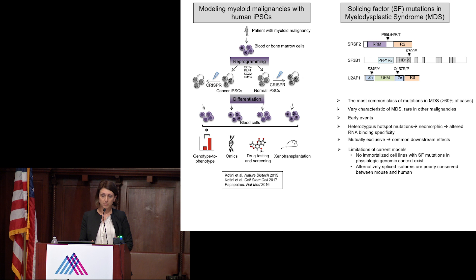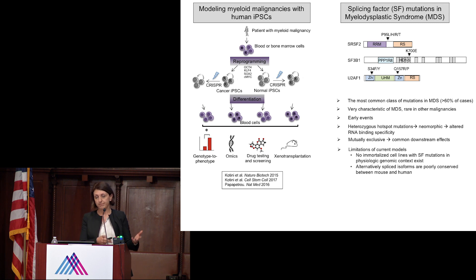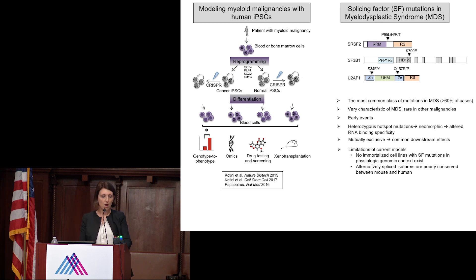We're using reprogramming to pluripotency to derive induced pluripotent stem cells, or iPSCs, from patients with blood cancers and myeloid malignancies, starting with cells from the bone marrow or the blood that typically contains both cancer and normal cells. We're deriving these iPSC cell lines that, once we make them, are there forever, but unlike conventional cell lines, they are more physiologically relevant and are maintained as immortal by pluripotency as opposed to strong oncogenes.